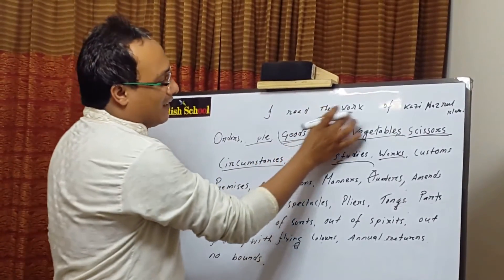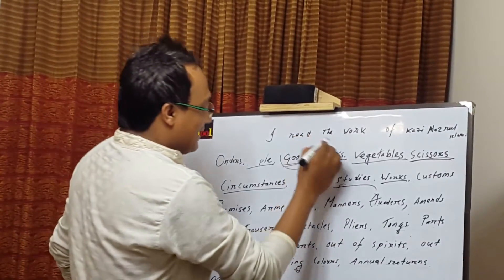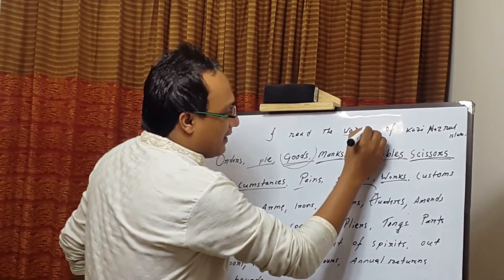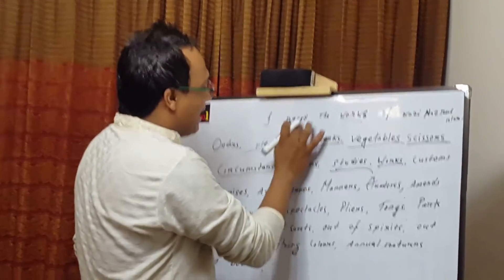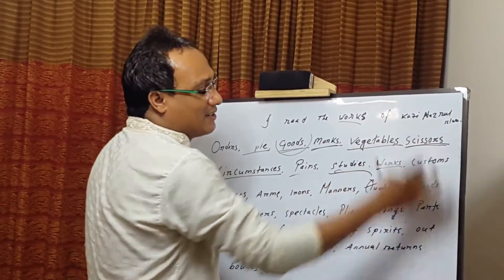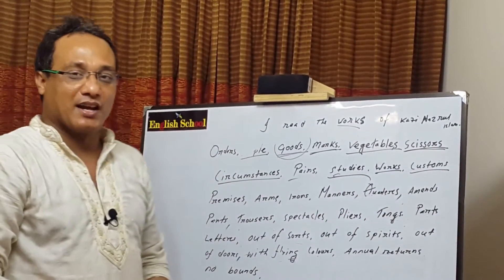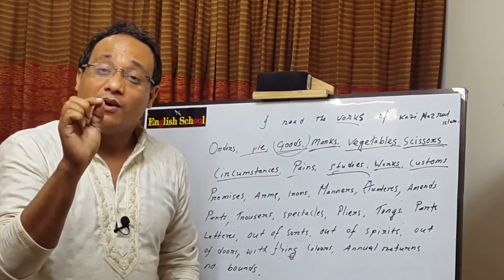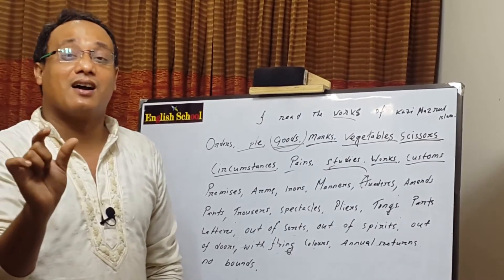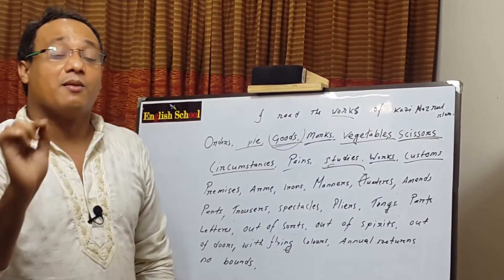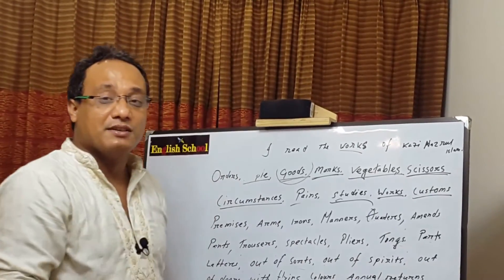Follow here — we usually say 'I read the work of Nazrul Islam,' but 'work' here must be 'works.' So the right English is: 'I read the works of Nazrul Islam.' The next example is 'customs.' We may say 'The custom of Bangladesh is very good,' but that is wrong. The correct sentence is: 'The customs of Bangladesh are very good.' We must use the plural verb 'are.'